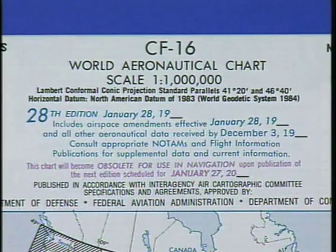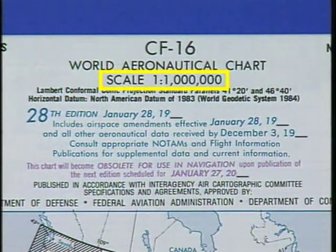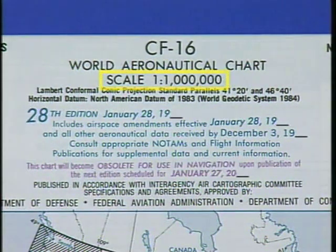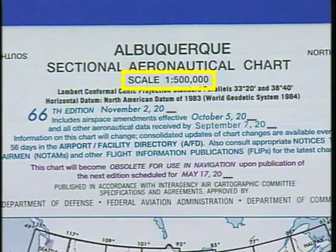Since the scale on a world aeronautical chart, or WAC chart, is 1 to 1 million, it covers the most area. A 1 to 1 million scale means that each inch on the chart represents 1 million inches, or approximately 14 nautical miles on the actual surface. The sectional chart is the most widely used chart. It gives you more detail than the WAC chart, since its scale is 1 to 500,000; therefore 1 inch on the chart represents about 7 nautical miles.